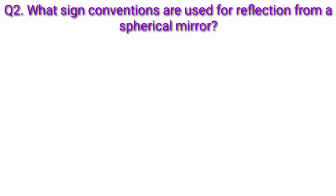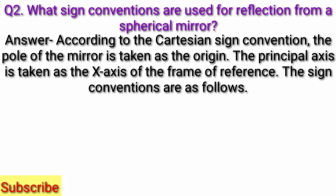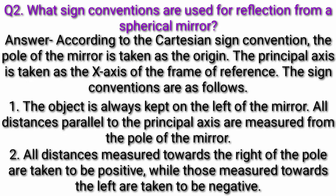Question 2: What sign conventions are used for reflection from a spherical mirror? Answer: According to the Cartesian sign convention, the pole of the mirror is taken as the origin. The principal axis is taken as the x-axis of the frame of reference. The object is always kept on the left of the mirror. All distances parallel to the principal axis are measured from the pole of the mirror. All distances measured towards the right of the pole are taken to be positive, while those measured towards the left are taken to be negative.